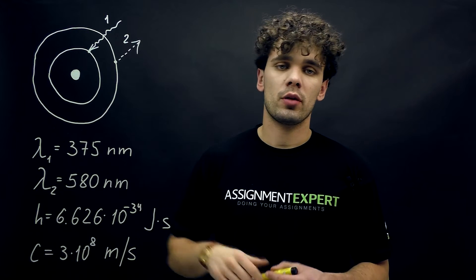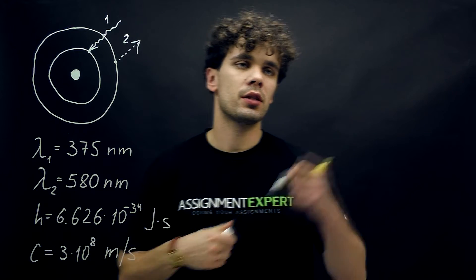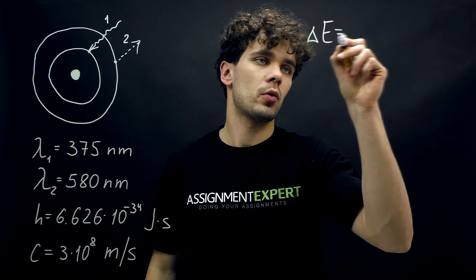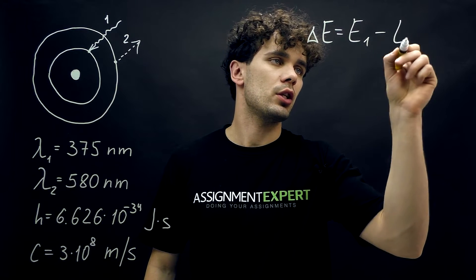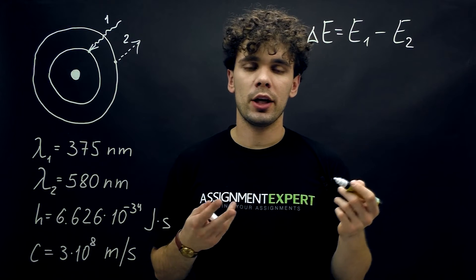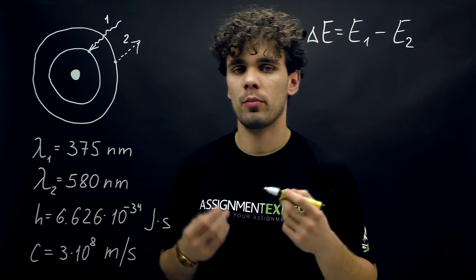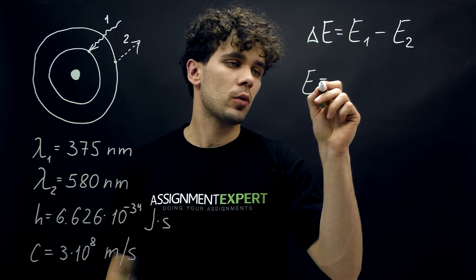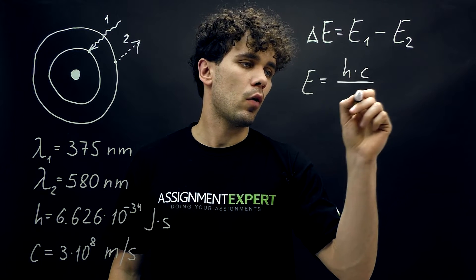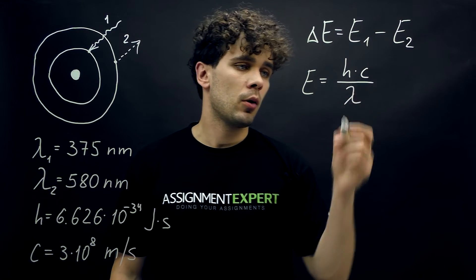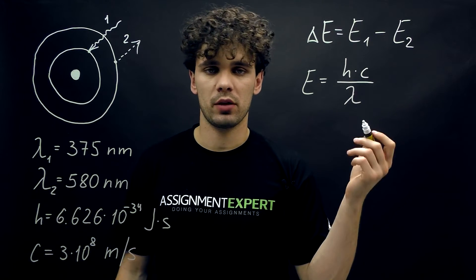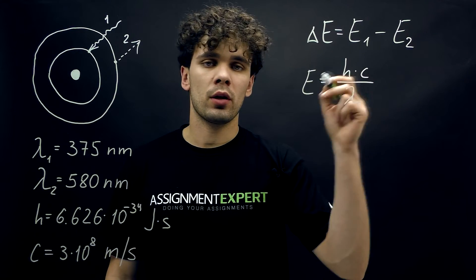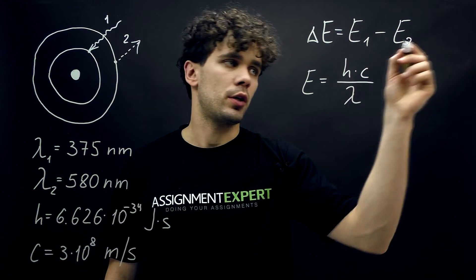So the energy absorbed by this atom is simply the difference between the energies of the first and the second photons, so it's E1 minus E2. Here we need to recall the relationship between the energy of a photon and its wavelength: E equals h times c over lambda, where h is the Planck's constant, c is the speed of light, and lambda is the wavelength of light.